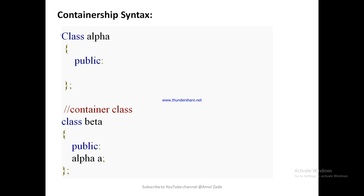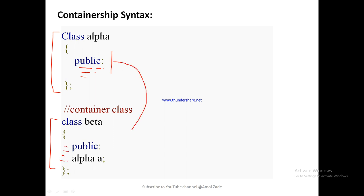For the general syntax, for example, this is class alpha which contains data members and member functions — that is the body of class alpha. The second class is class beta, which contains its own body. If we require the contents from class alpha in class beta but without using any kind of inheritance, we achieve this with containership. We create the object of class alpha into class beta — that is, the object of one class into another class.